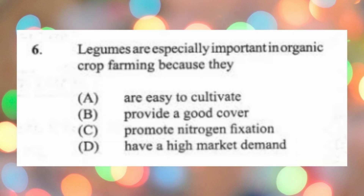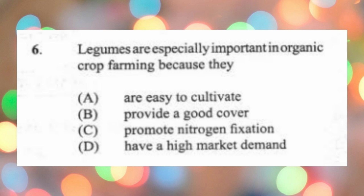Question 6: Legumes are especially important in organic crop farming because they (a) are easy to cultivate, (b) provide a good cover, (c) promote nitrogen fixation, (d) have a higher market demand. The answer is C, promote nitrogen fixation. Nitrogen fixation is when nitrogen gas in the atmosphere is converted to nitrates by bacteria in the soil. These bacteria are normally found in the root nodules of legume plants such as beans and peas.